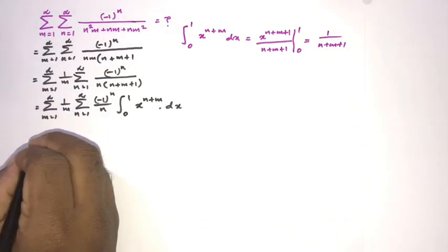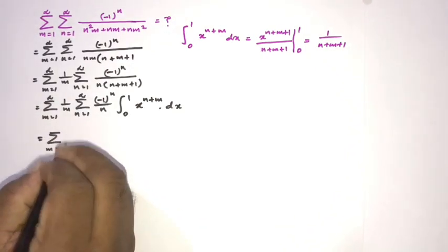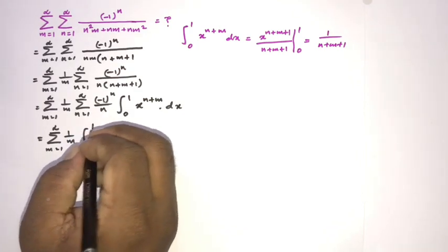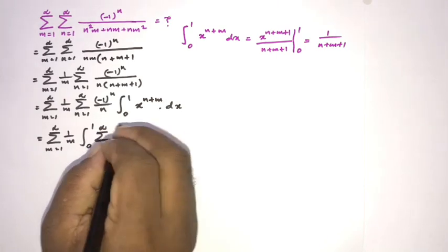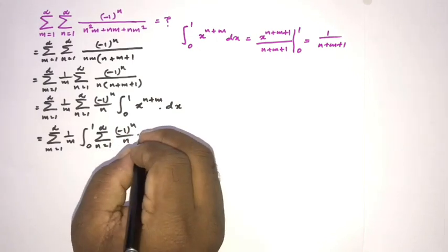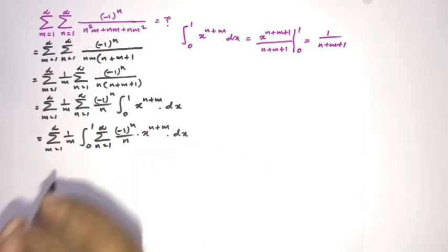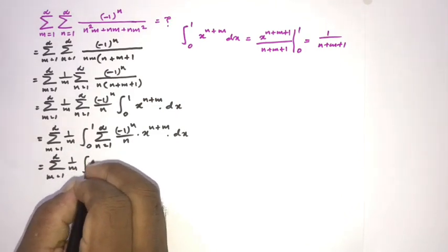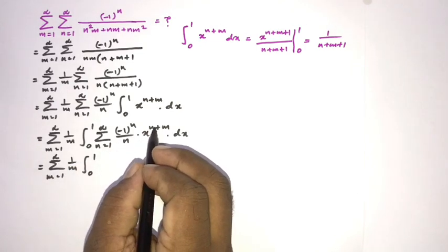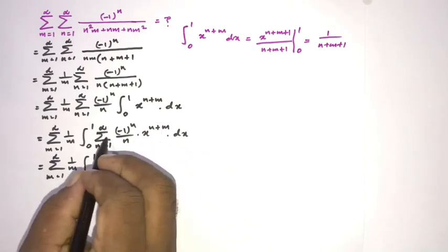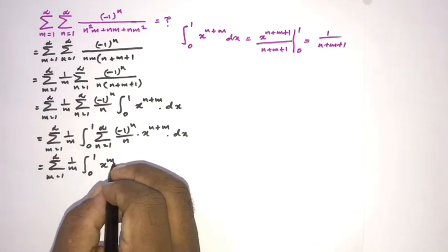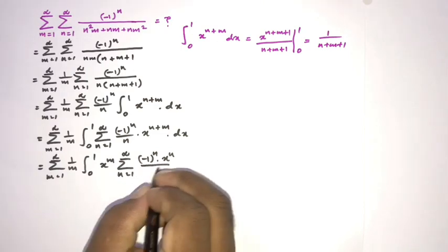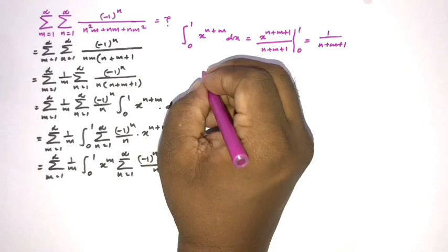We now have the sum over m from 1 to infinity of 1/m, and we switch the integral sign and sigma notation to get the integral from 0 to 1 of the sum over n from 1 to infinity of (-1)^n x^(n+m) / n dx. Since x^(n+m) = x^n · x^m, we can factor x^m outside the sum, giving x^m times the sum over n from 1 to infinity of (-1)^n x^n / n.